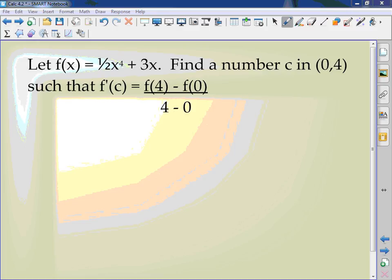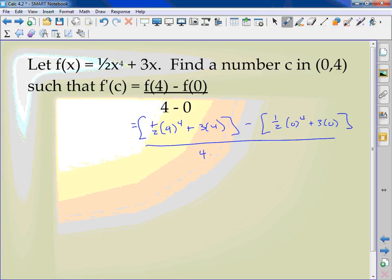First thing we're going to do is just solve this by putting in four into the equation. If I really have, I'll just put in the numbers: one-half, four to the fourth, plus three times four, minus one-half, zero to the fourth, plus three times zero, all over four minus zero.